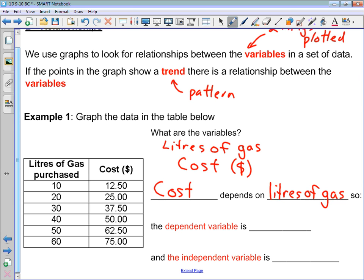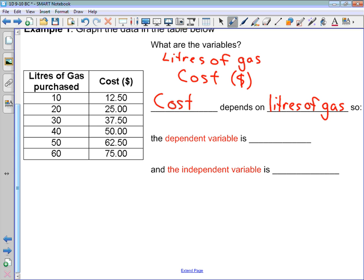So because cost depends on liters of gas, the dependent variable, or the one that depends on the other one, is cost. The independent variable must then be liters of gas. When we're setting up our scatter plot, we're always going to plot our dependent variable on the side. This is going to go on the side of our graph. And liters of gas, our independent variable, is going to go along the bottom.